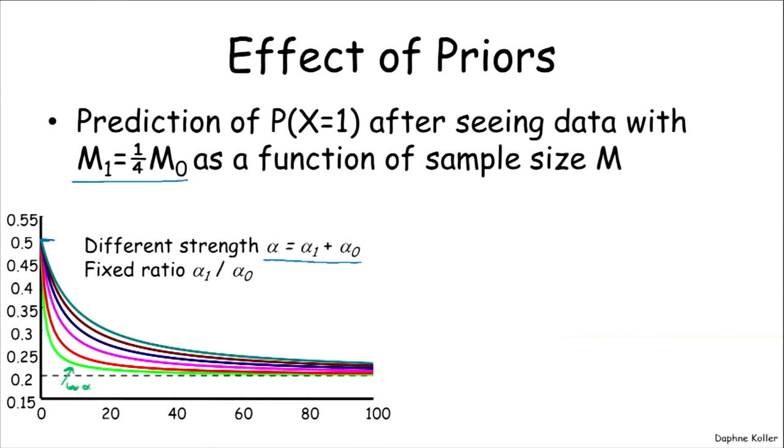And so this little green line down at the bottom represents a low alpha. Because we can see that the data pulls our posterior, so the line is drawing the posterior over the parameter or rather equivalently the prediction of the next data instance over time. And you can see that here alpha is low. And that means that even for a fairly small amount of data, say 20 data points, we're already very close to the data estimate.